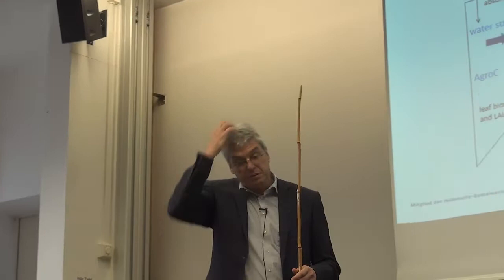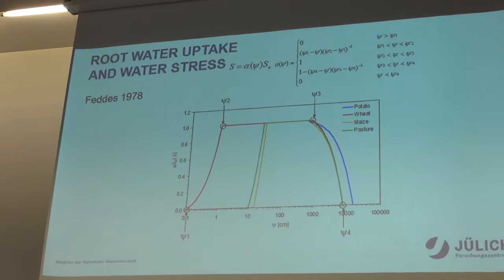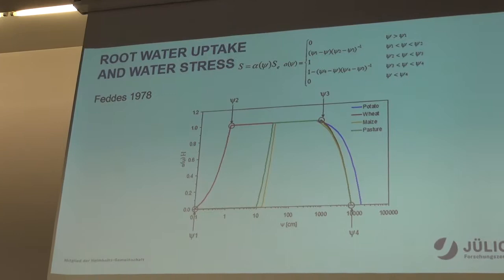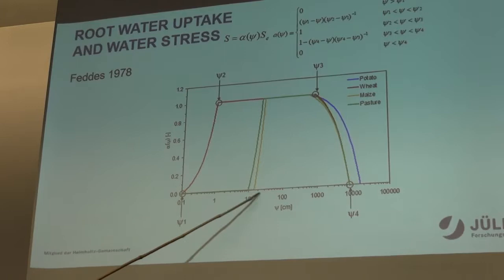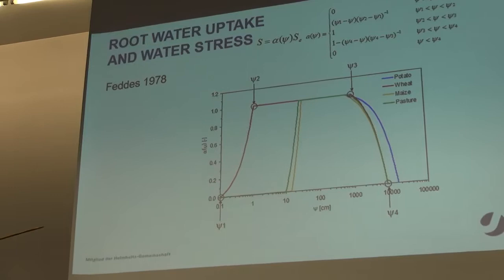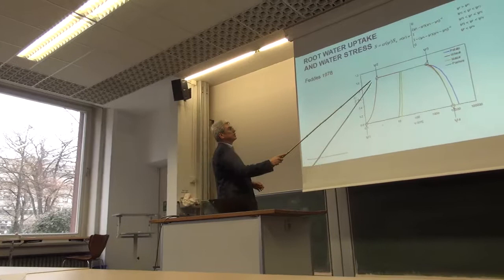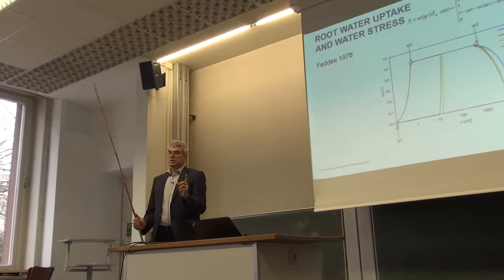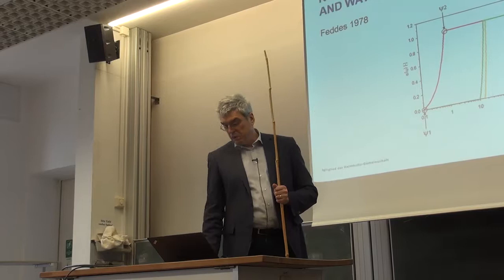An example of how a water stress function could look: this is the FEDIS approach, well known in crop science modeling. We also have other models like Hoover available. This shows the range where water uptake is optimal — no stress — and areas where it's too wet or too dry, showing a reduction in the uptake function. The question is: can we use fluorescence information to better estimate these two threshold parameters?